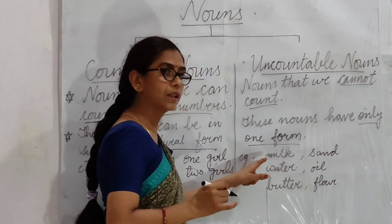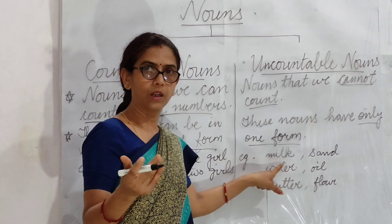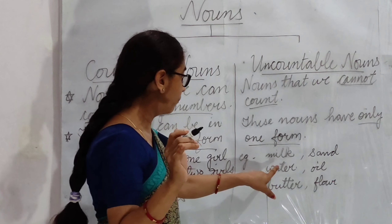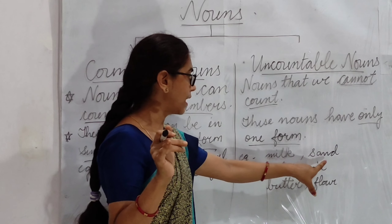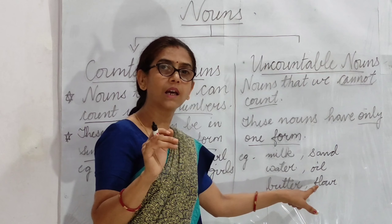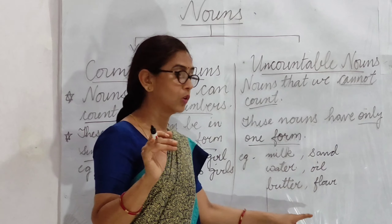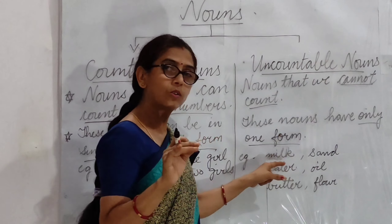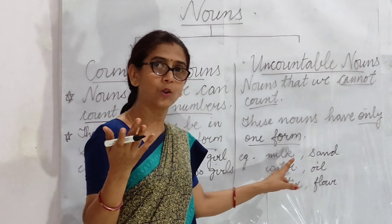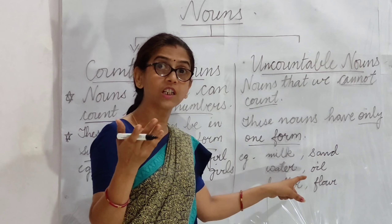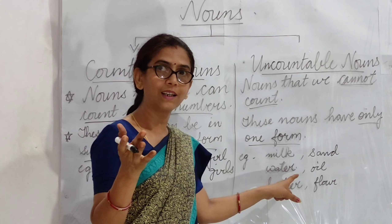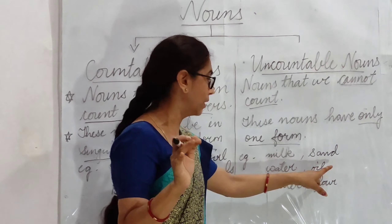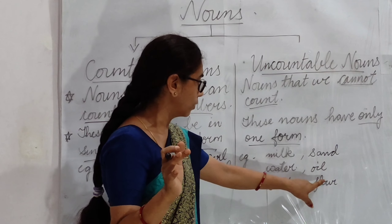Milk — milk kya hai? Uncountable noun hai. Aap milk ko count nahi kar saktay. Water, sand, oil, flour — all these are uncountable nouns. Kyunki in nouns ko hum gin nahi saktay. Aapne kabhi suna ki milk ka milks? Nahi hota na — milks nahi hota, waters nahi hota, sands nahi hota, oils bhi nahi hota.